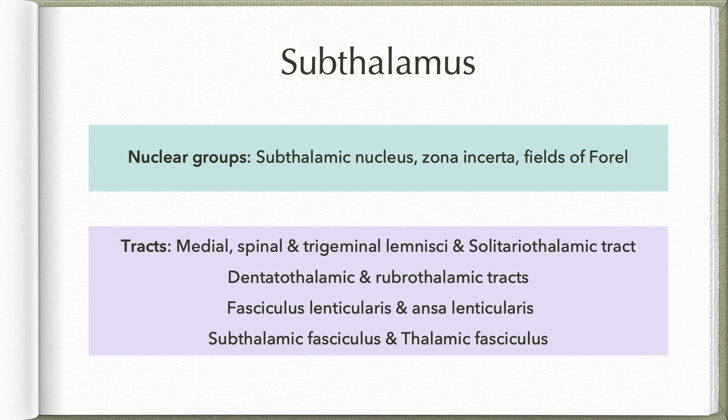These include the medial lemniscus and spinal lemniscus, which will be relaying in the ventral posterior lateral nucleus of the thalamus; the trigeminal lemniscus and solitariothalamic tract, which relay in the ventral posterior medial nucleus of the thalamus; and the dentitothalamic and rubrothalamic tracts, coming from the superior cerebellar peduncle of the contralateral side, reaching the ventral anterior and ventral lateral nuclei of the thalamus. All these fibers pass through the subthalamic region before reaching their destination.